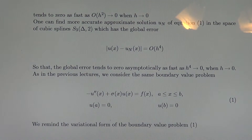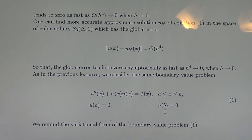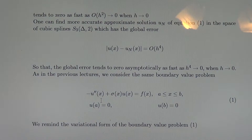As in the previous lectures, we consider the same standard boundary value problem: minus second derivative of U plus sigma U equals F on the interval A to B, with homogeneous boundary conditions U(A) equals zero and U(B) equals zero, to clarify the idea of the finite elements method.